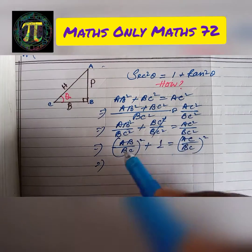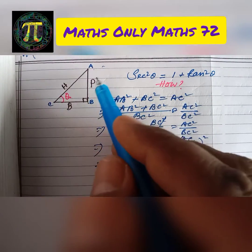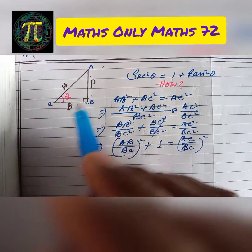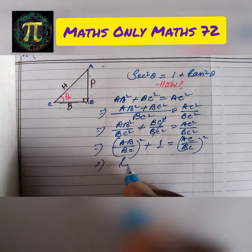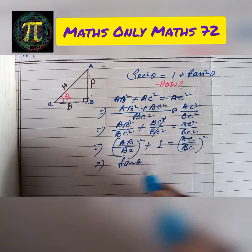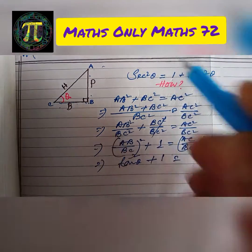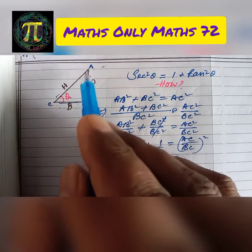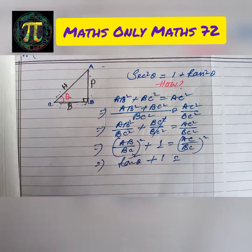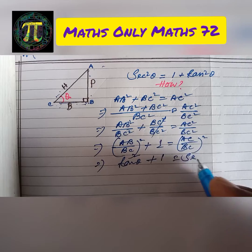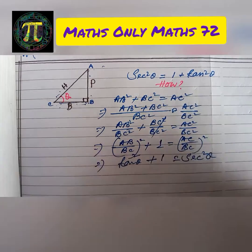Now, AB by BC, which is perpendicular by base, is tan theta. So tan squared theta plus 1 equals AC by BC, which is hypotenuse by base, or sec squared theta.